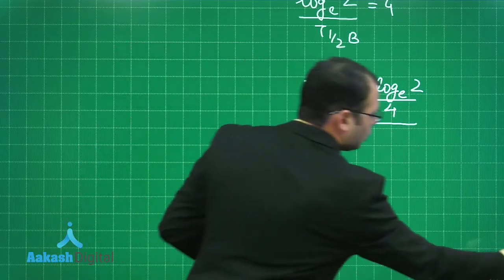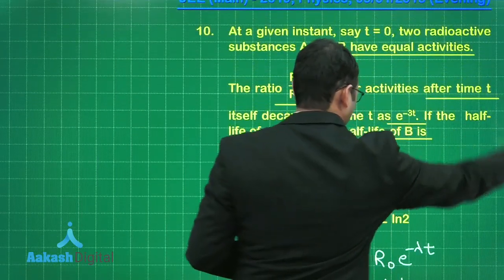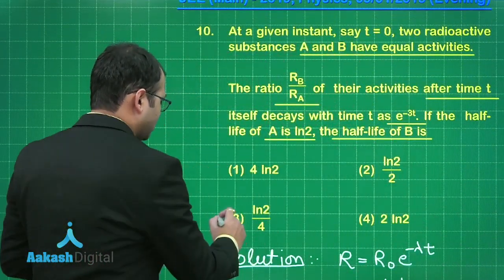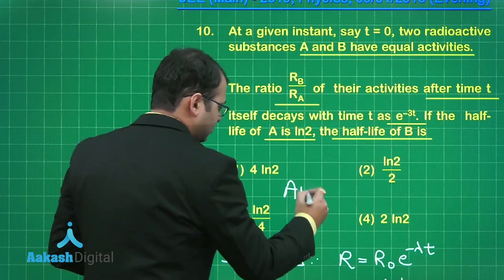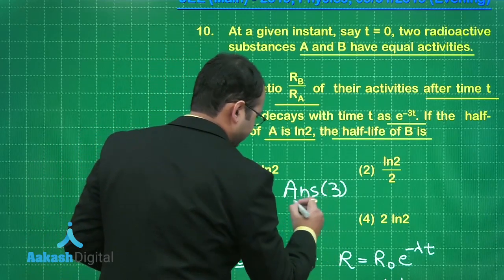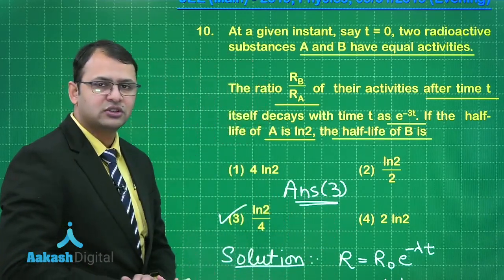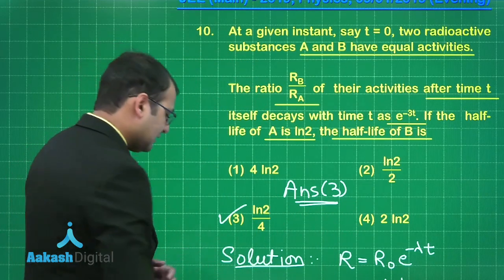So the right answer is natural log of 2 divided by 4. Looking at the given options, option number 3 is the best suited answer for this question.